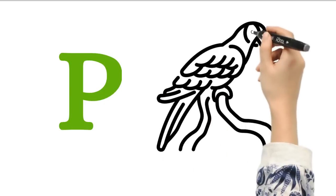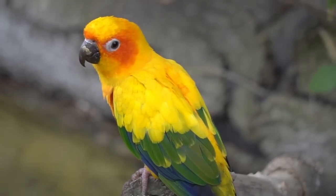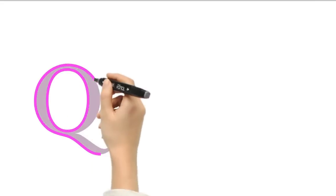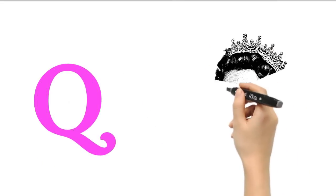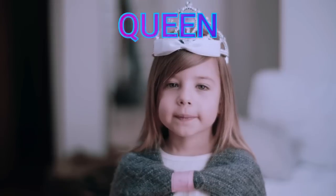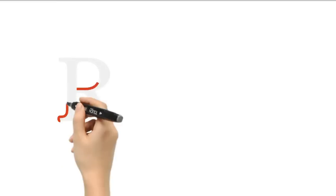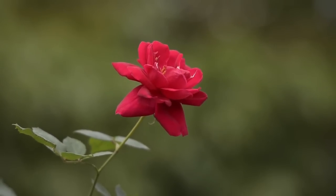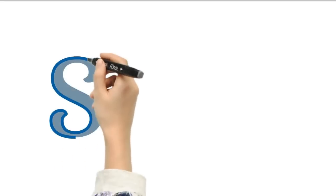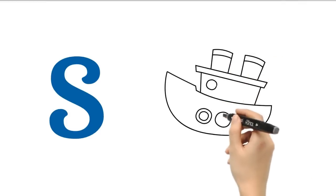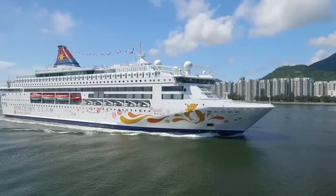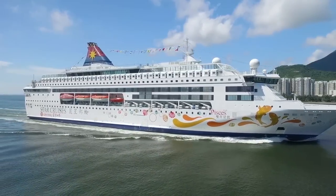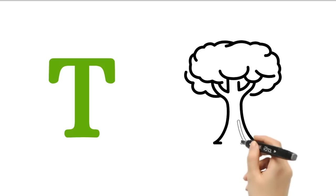P. P for parrot. Q. Q for queen. R. R for rose. S. S for ship. T. T for tree.